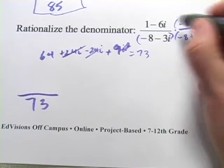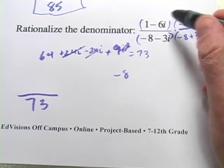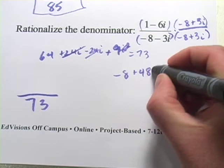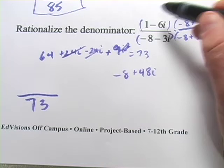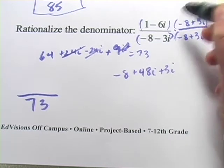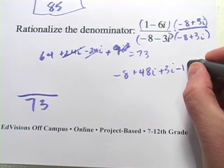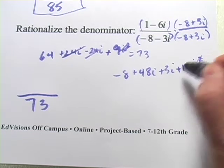Now let's FOIL out the top. 1 times negative 8 is negative 8. Negative 6i times negative 8 is a positive 48i. And 1 times 3i is a positive 3i. And negative 6i times 3i is going to be negative 18i squared. Again, this is a negative 1. So this is a positive 18.